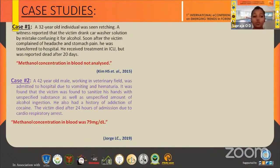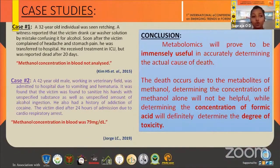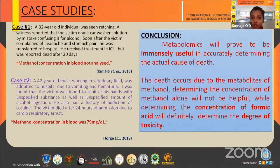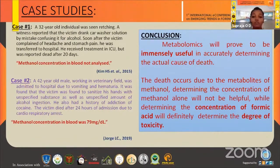In conclusion, though these two cases were accidental deaths, if the same were a crime scene, metabolomics would prove to be immensely helpful in accurately determining the actual cause of death. Death occurs due to the metabolites of methanol. Determining the concentration of methanol alone will not be helpful since it can be easily metabolized, while determining the concentration of formic acid will definitely determine the degree of toxicity. Thank you.